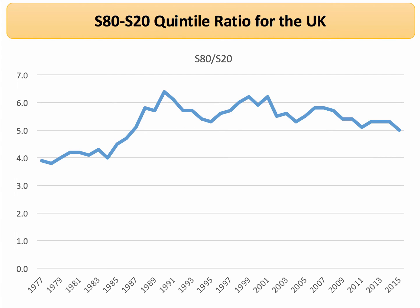What does the data look like for the UK? This chart shows the ratio of the equivalised disposable incomes of the richest fifth of the population to that of the poorest fifth of the population. We can see the ratio is significantly more than one — it started off at four in 1977, and by the late 1980s and early 1990s it was above six.